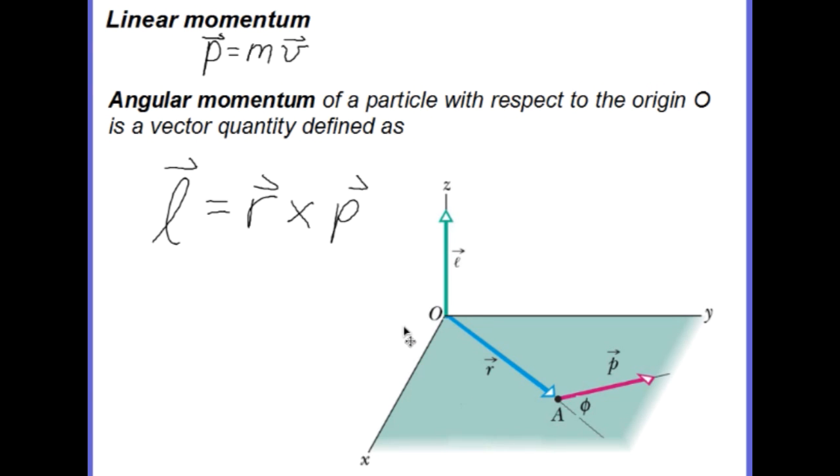As the particle moves relative to point O in the direction of its momentum, position vector R rotates about point O. Note carefully that to have angular momentum about point O, the particle does not itself have to be rotating. It can be moving in a straight line with momentum P. But you can think of the angular momentum as the vector R rotating about point O.